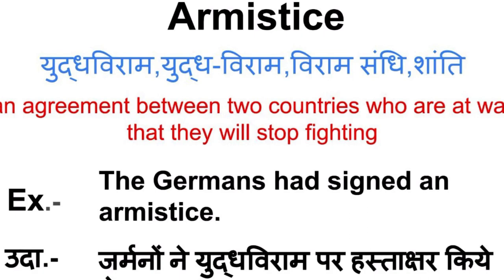What does this mean? There are some examples. Armistice meaning — Yudhaviraam, Viram Sandhi, Shanti. In English, its meaning is an arrangement between two countries who are at war that they will stop fighting.